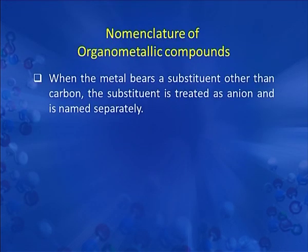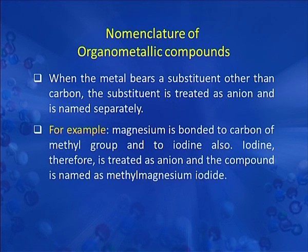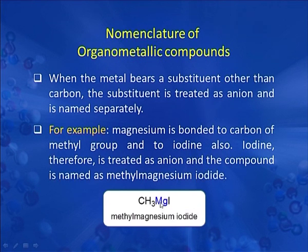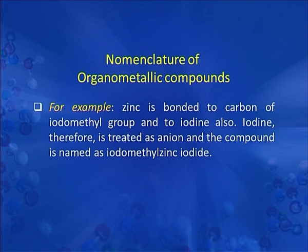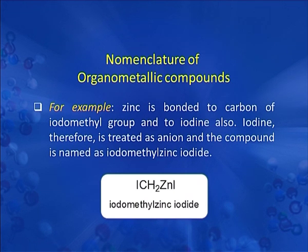When the metal bears a substituent other than carbon, that substituent is treated as an anion and named separately. For example, when magnesium is bonded to both the carbon of a methyl group and to iodine, the name of the molecule is methyl magnesium iodide. Another example: when zinc is bonded to the carbon of an iodomethyl group and to iodine, the name becomes iodomethyl zinc iodide.